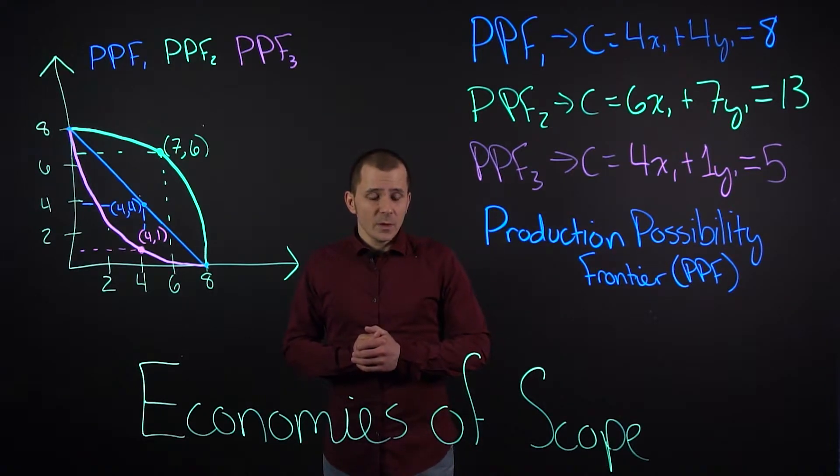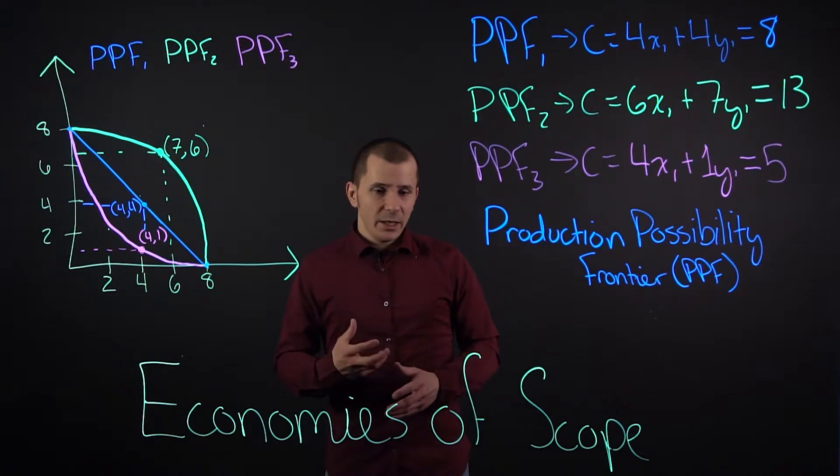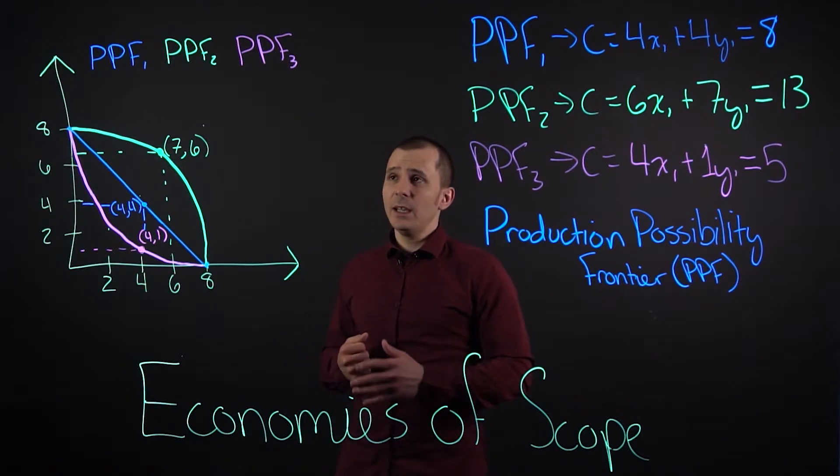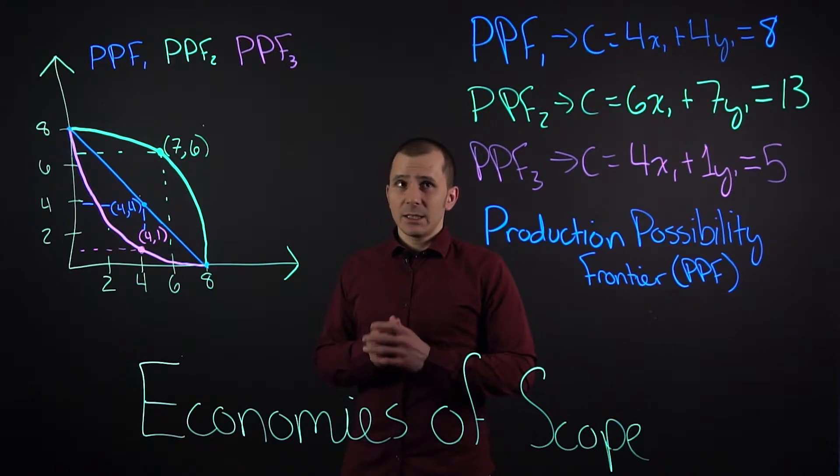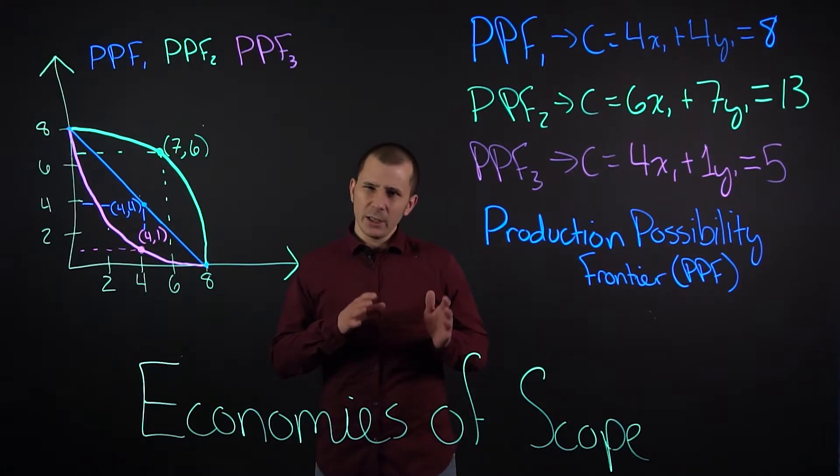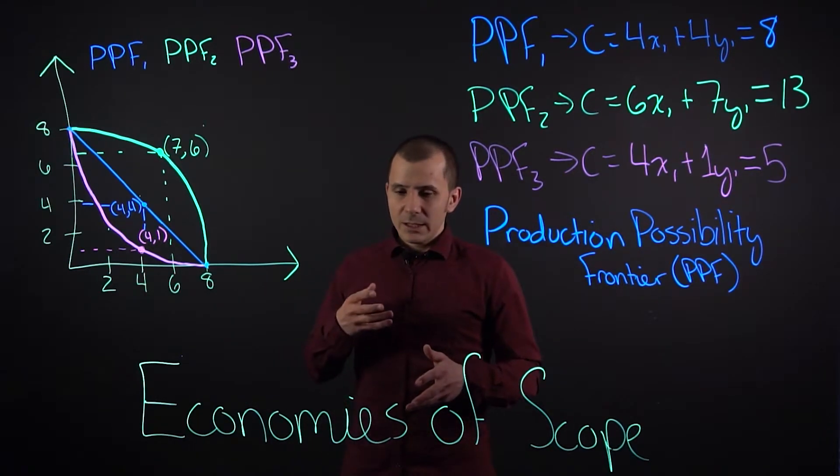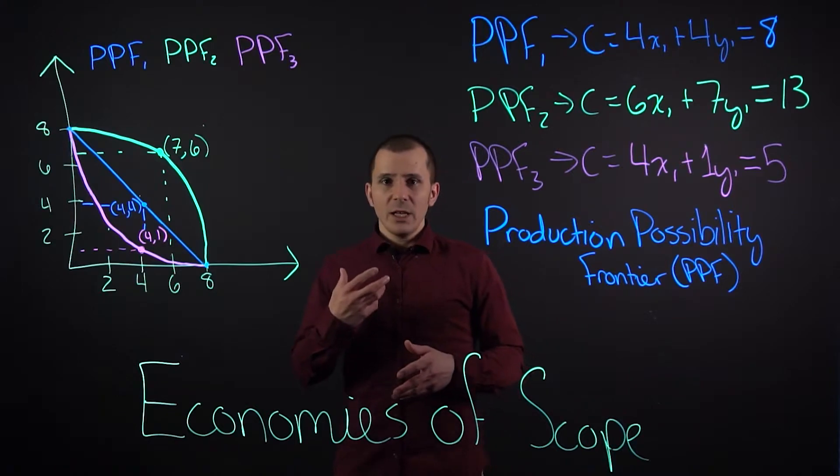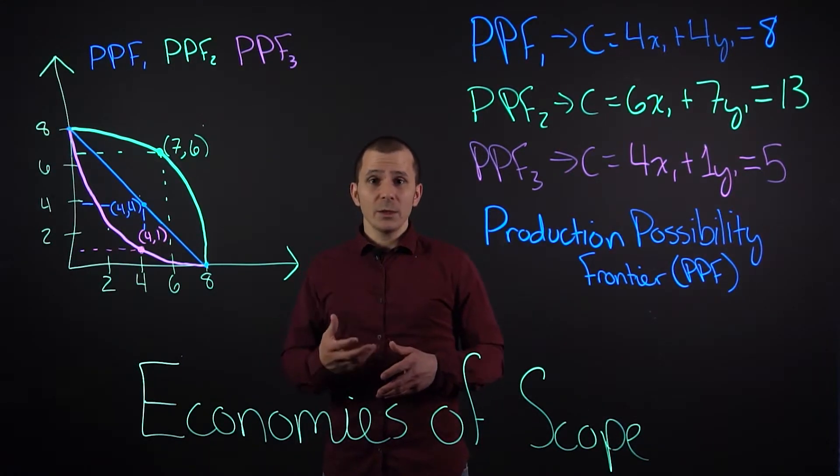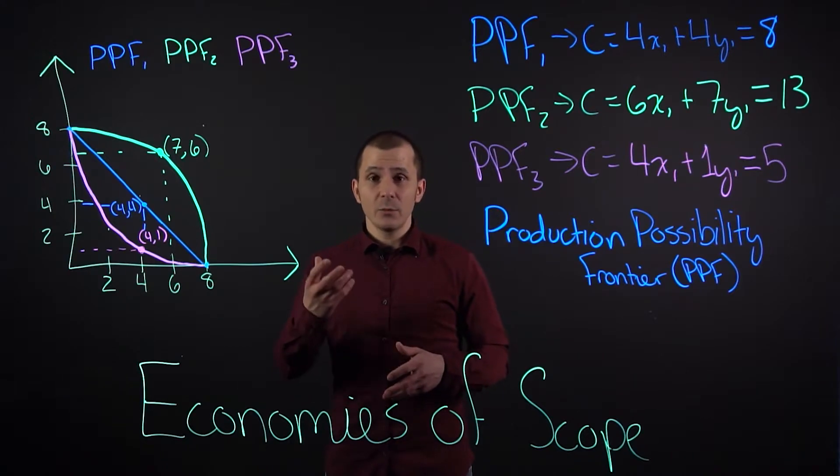As a company develops into a multi-product company, we can calculate its PPF, or product possibility frontier, and essentially, they are able to increase the average production of products while also reducing the average price per unit.